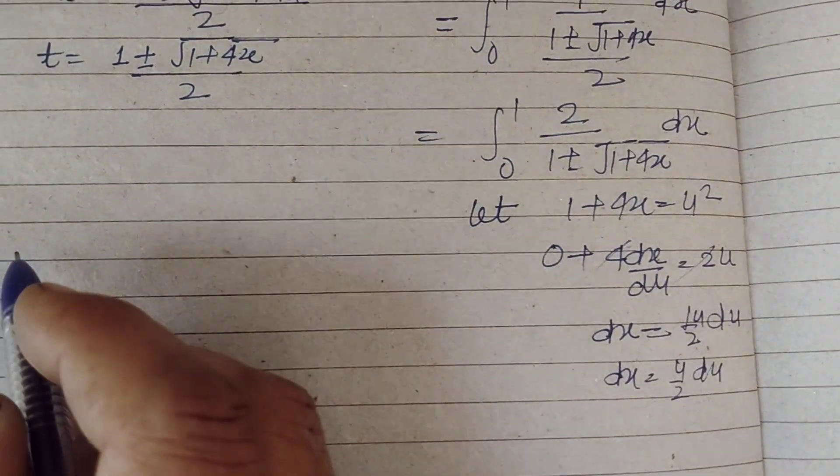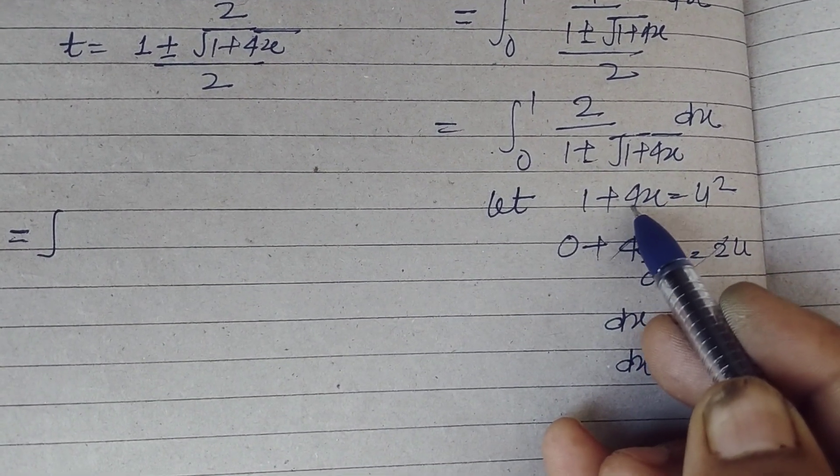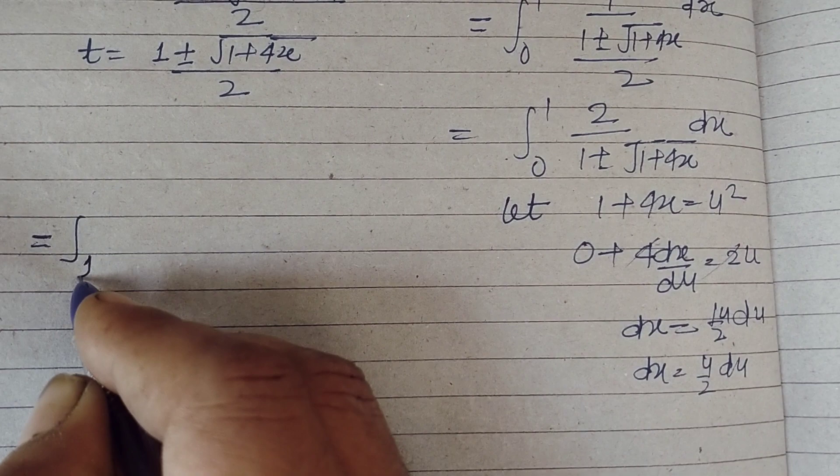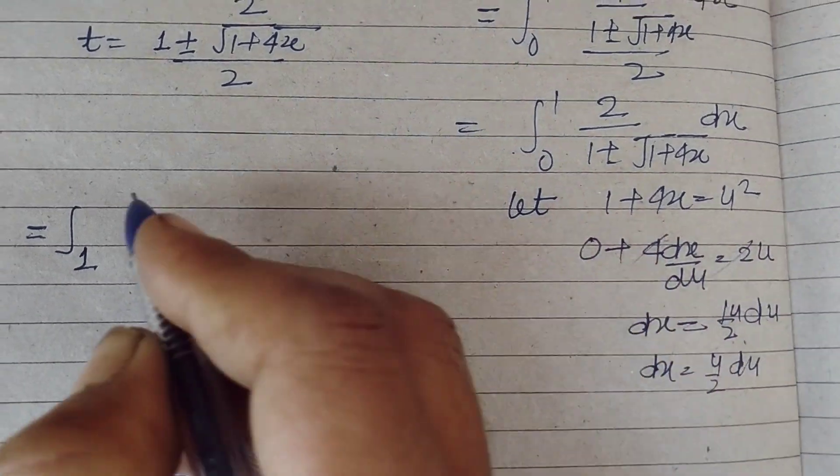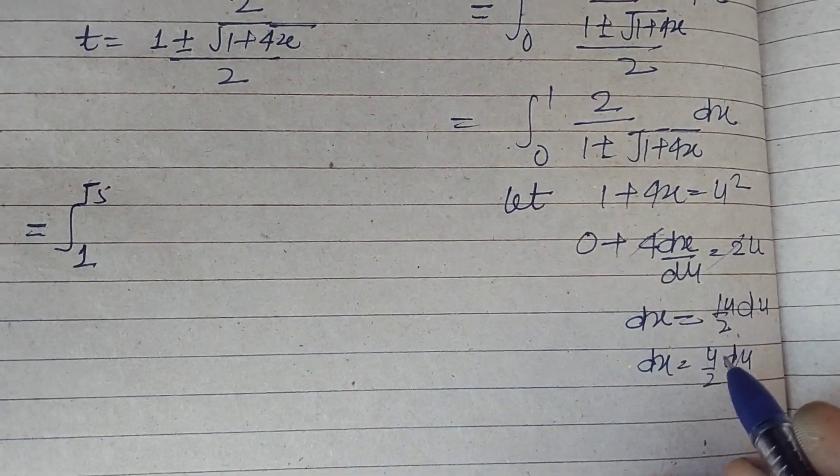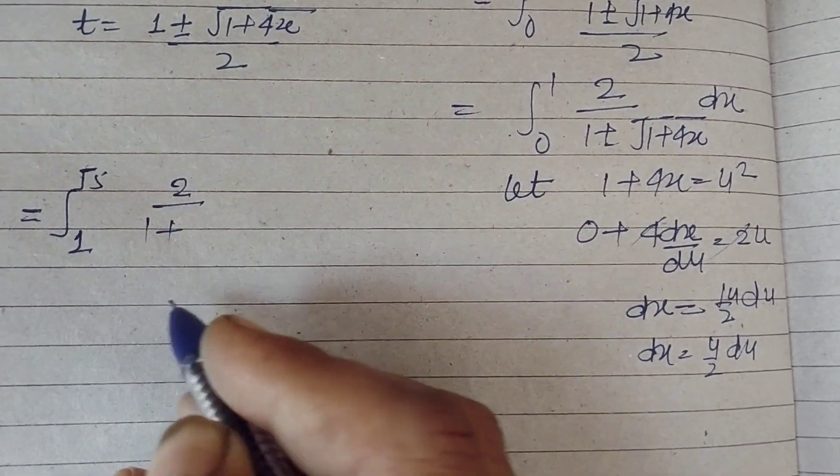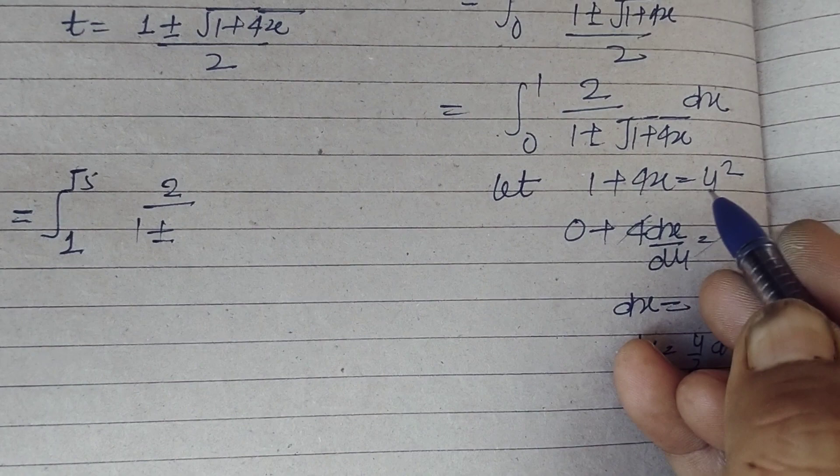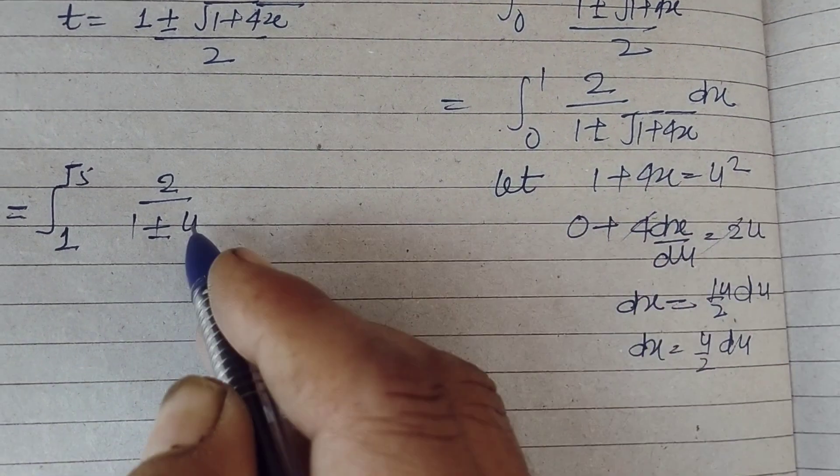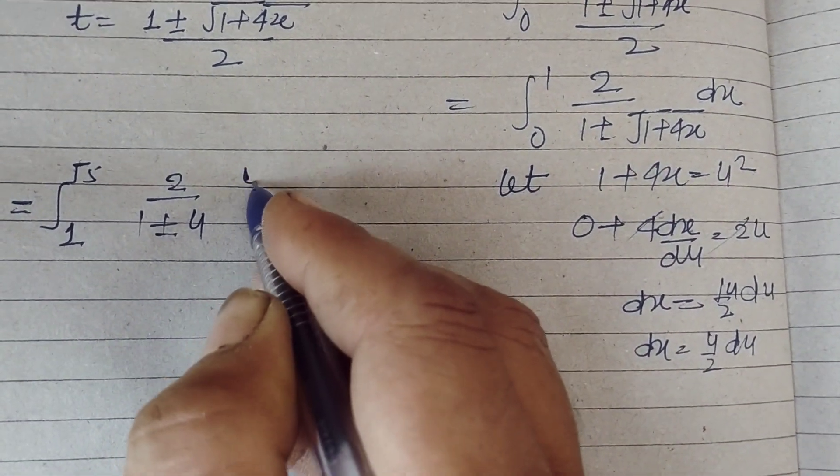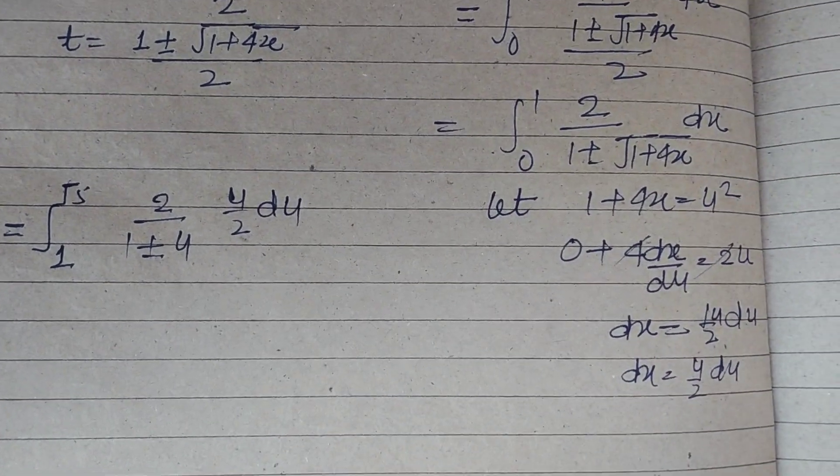Now we change limits. So what we get: when we put x equal to zero, we get one, and when we put x equal to one in this, one plus four equals five, so this is root five. And this is two upon one plus minus u, and we put here u square, so this is one plus u, and u by two du. So two cancels.